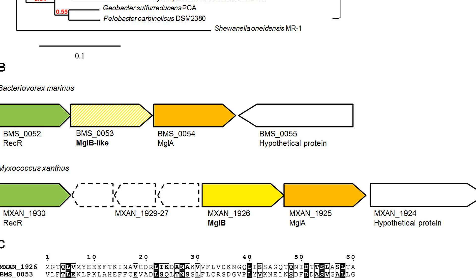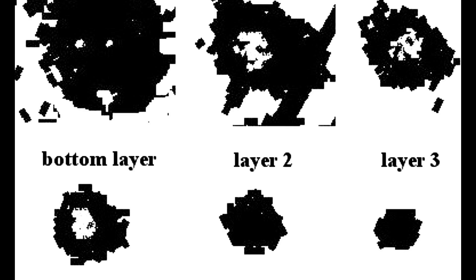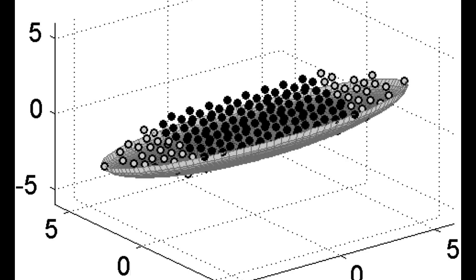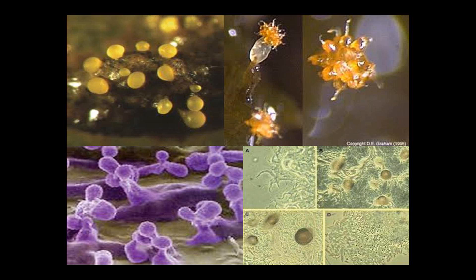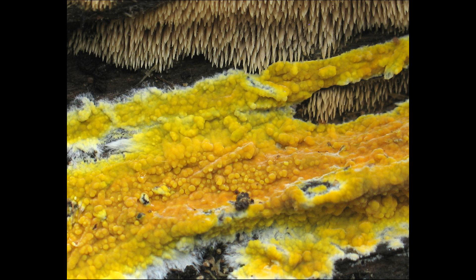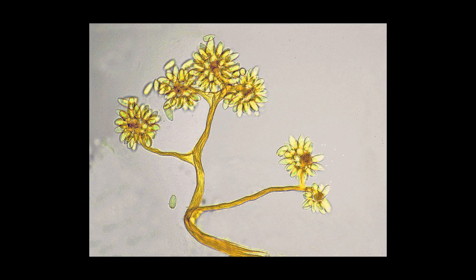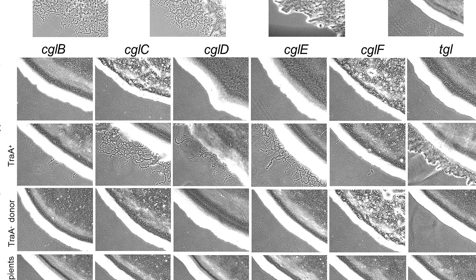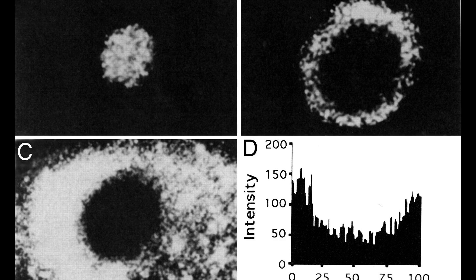Similar life cycles have developed among certain amoeba called cellular slime molds. At a molecular level, initiation of fruiting body development in Myxococcus xanthus is regulated by the PXR signaling pathway. Myxobacteria such as Myxococcus xanthus and Stigmatella aurantiaca are used as model organisms for the study of development.